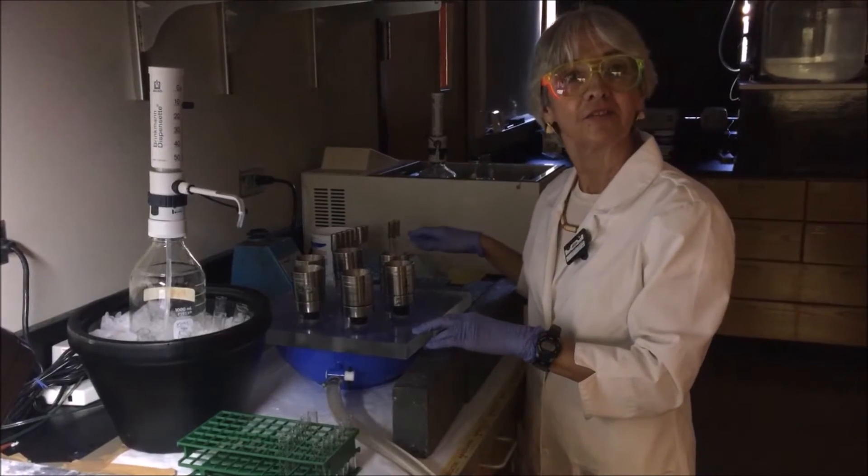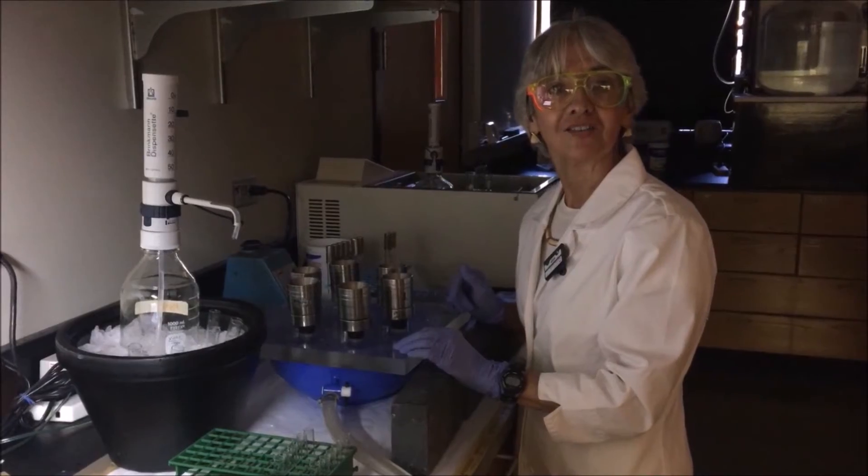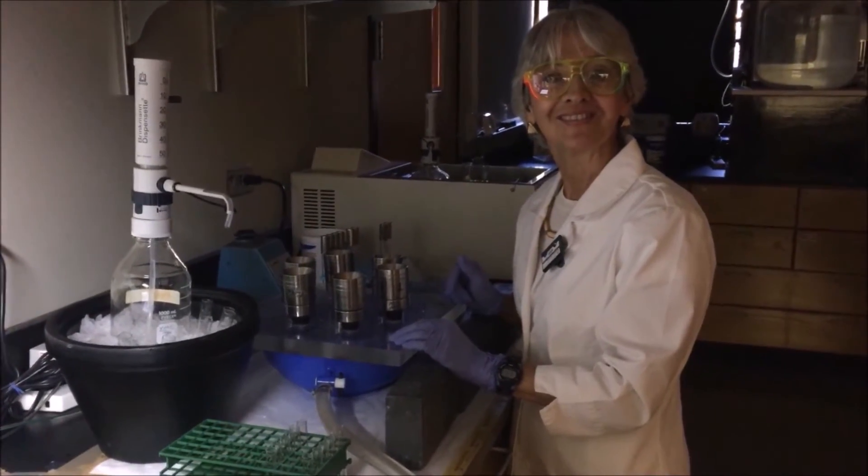And I'm making sure that the cells are transporting ferric enterobactin normally. So I use radioactive labeled ferric enterobactin. And then I measure the amount of iron that the cells are getting in vivo. Awesome. Thank you. Okay.